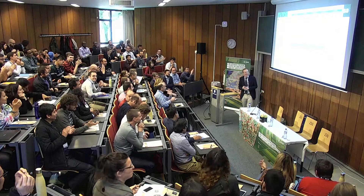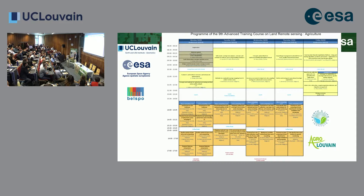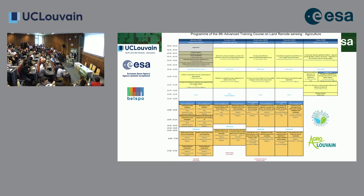A reminder about the poster session tomorrow: to display your poster at lunchtime you need to bring it in the morning. Three participants did not print their posters — they can be printed, costing between 25 and 30 euros. Please provide your file to John now, before going to lunch, so he can go to the print shop and return the poster to you.